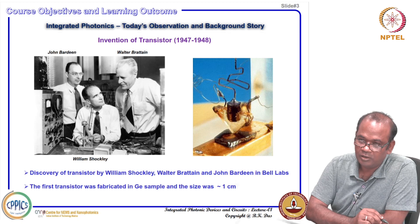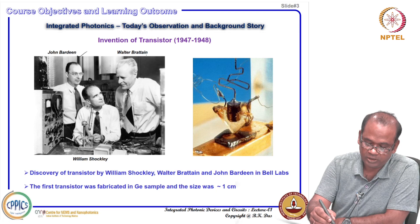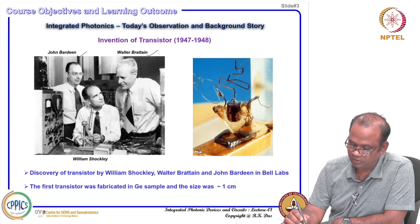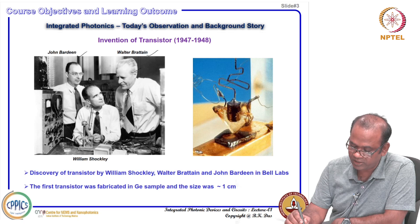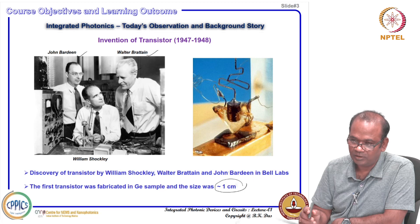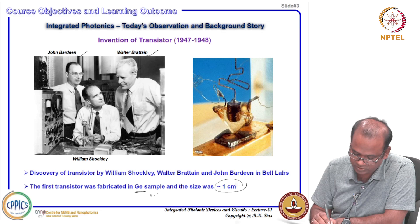The transistor was first demonstrated by three stalwarts: John Bardeen, Walter Brattain, and William Shockley. This is the photograph of the first transistor demonstrated in 1947. The size of this transistor was about 1 centimeter by 1 centimeter and it was made in a germanium sample. Germanium is a semiconductor with a band gap of about 0.6365 electron volts.